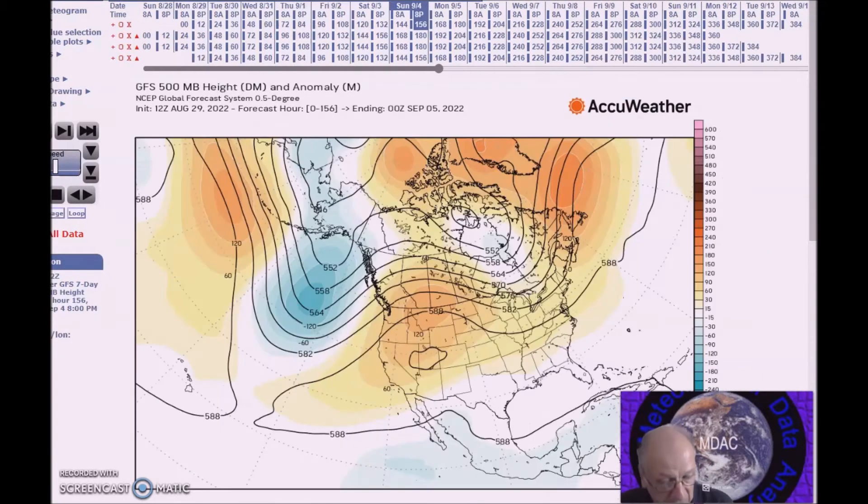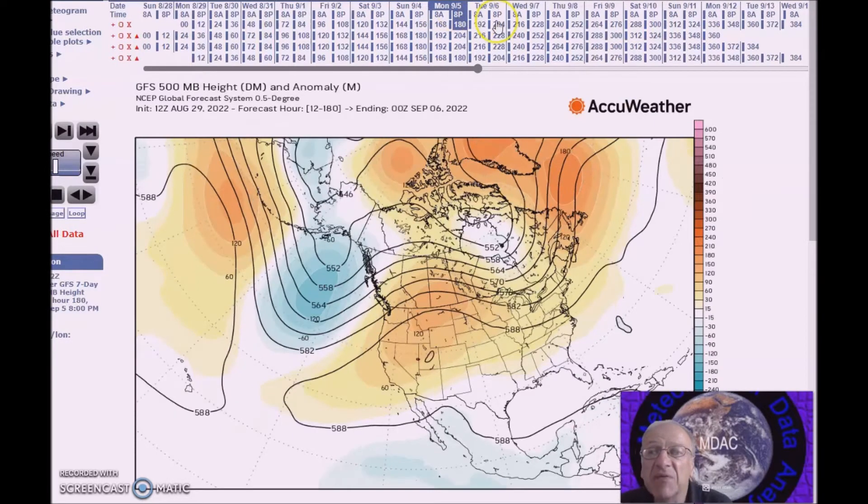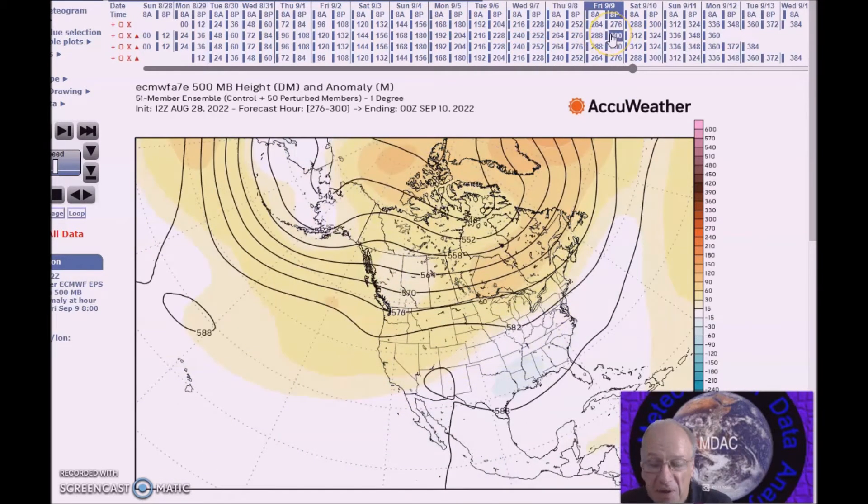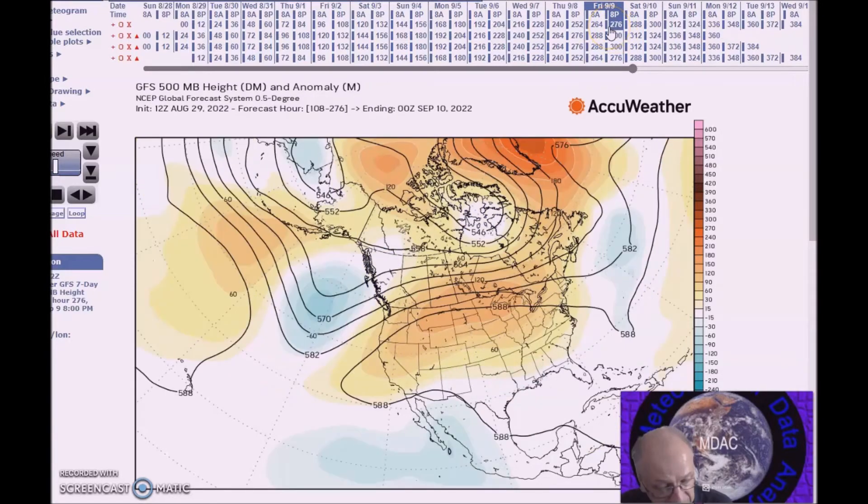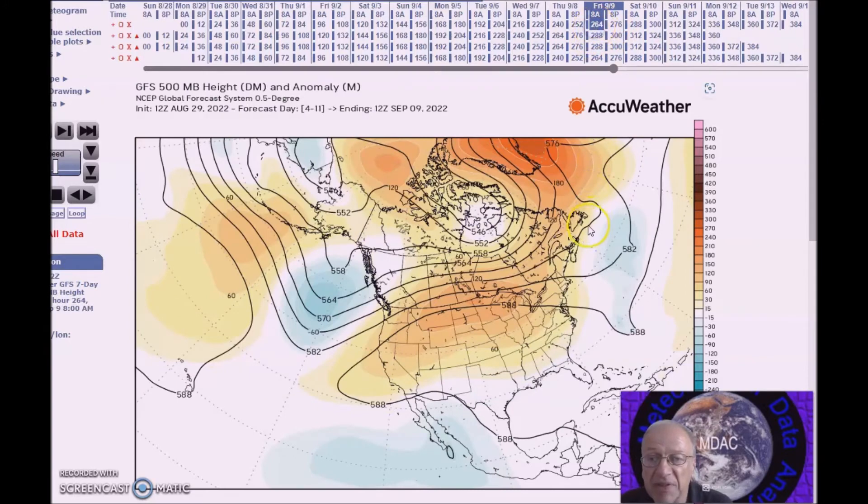We're going to look now at the period for September 6th to 10th. The pattern of a ridge-trough pattern persists across the Pacific, but a broad ridge covers much of the nation, something like this.